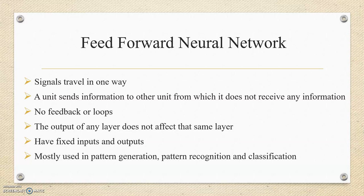In Feed Forward Neural Network, signal travels in only one way, from input to the output only. A unit sends information to another unit from which it does not receive any information. There are no feedback or loops in such networks. The output of any layer does not affect the same layer in such networks.